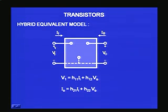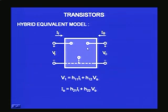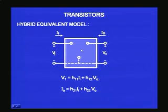We can apply a voltage here and measure the current and the output voltage. We can measure the output current, output voltage, etc. By performing some measurements on this two-port network, we can get a lot of information about the type of circuit inside the black box. The box is called black because we are ignorant of what is inside — it can have any kind of circuit. If it is an amplifier, there is a very specific relationship between the input and output parameters.